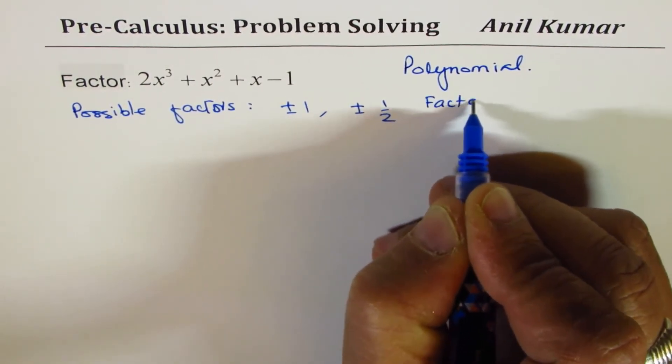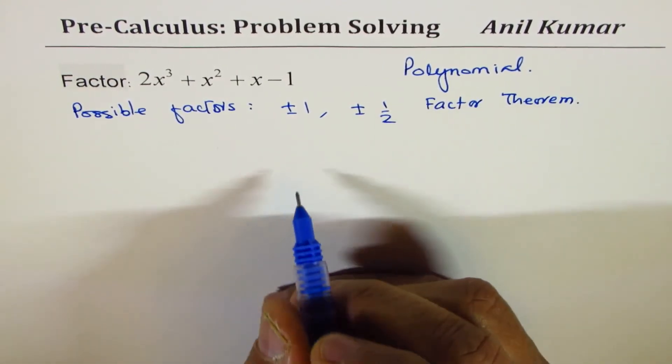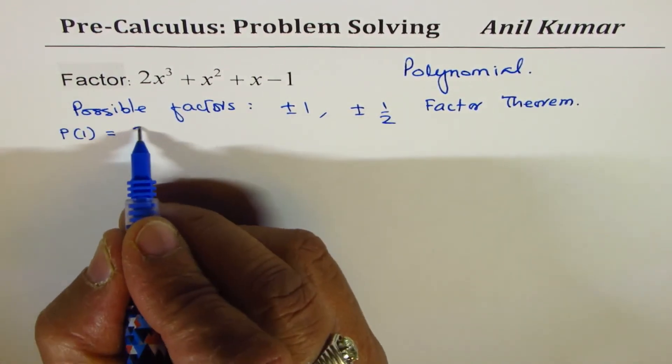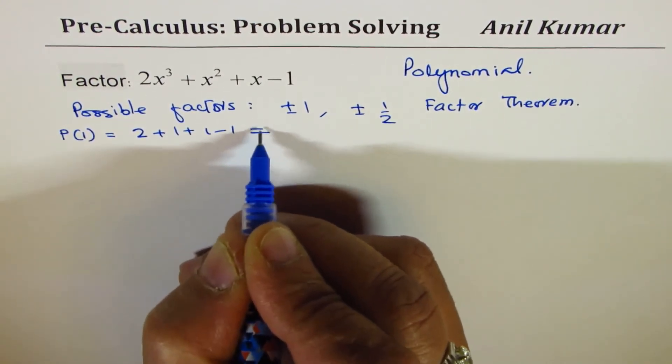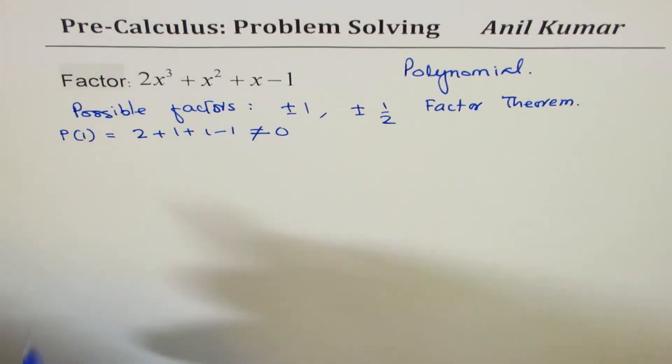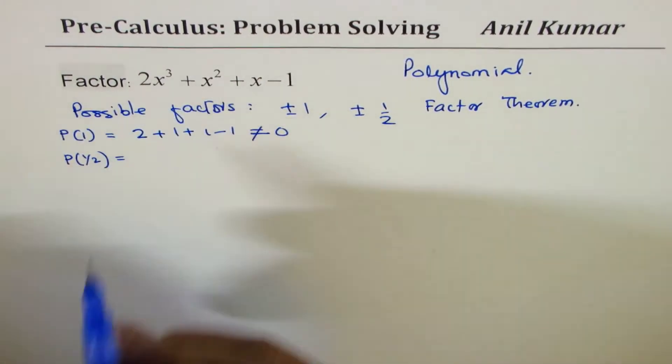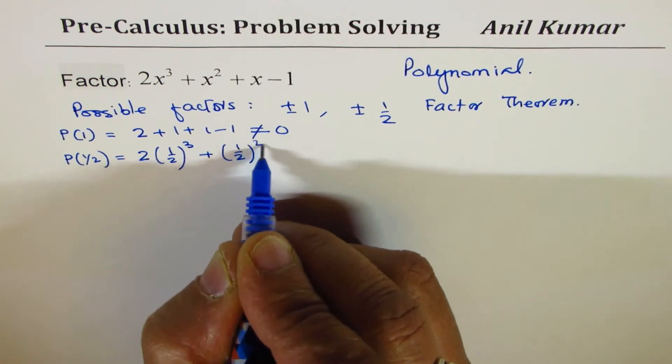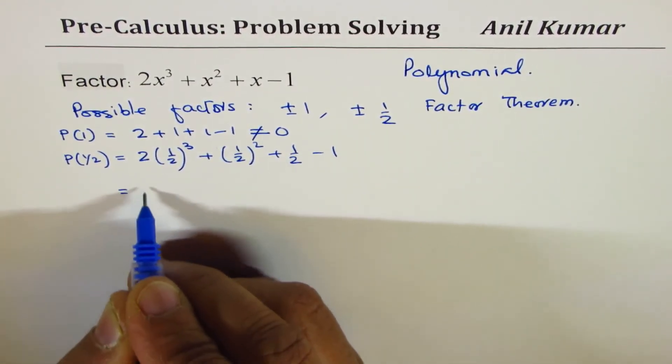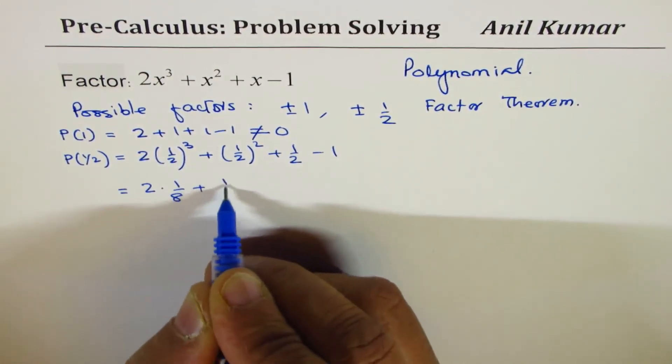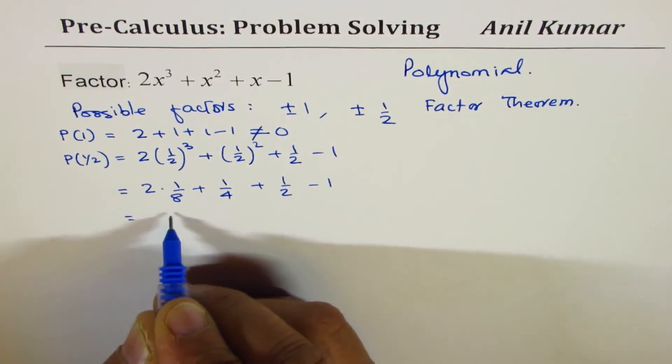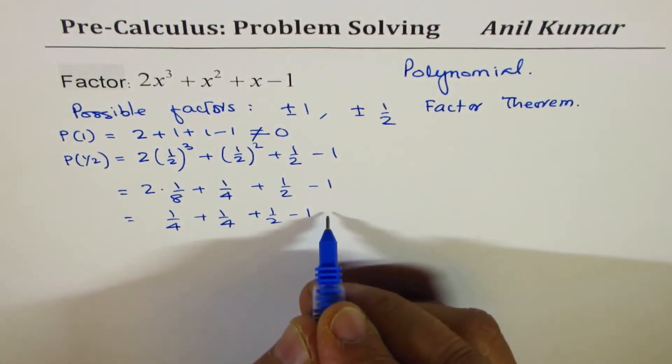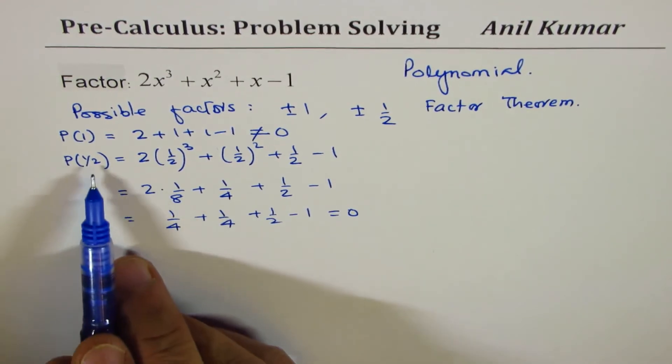So we'll now apply the factor theorem. That is to say, if I plug in a number, let's say if we find P(1). So if I substitute 1 here, what do I get? I get 2 + 1 + 1 - 1. It is not equal to 0. We're looking for something which could give us 0. Well, let's apply 1/2. So if I write 1/2 here, I get 2(1/2)³ + (1/2)² + 1/2 - 1. That is 2(1/8) + 1/4 + 1/2 - 1, which is 1/4 + 1/4 + 1/2 - 1. And that is 0.